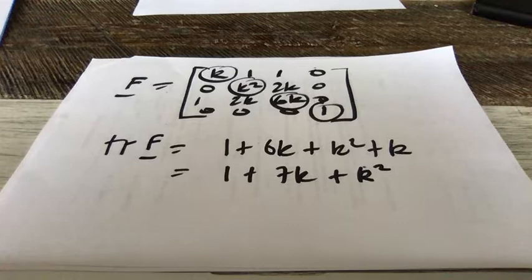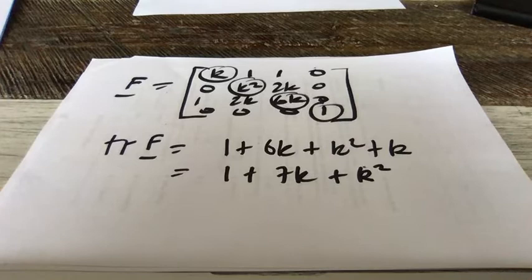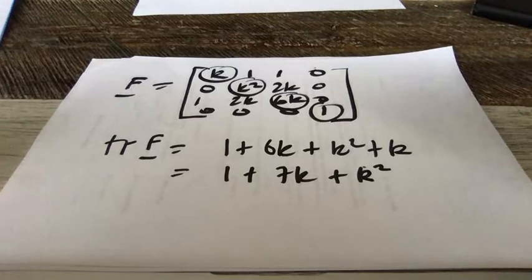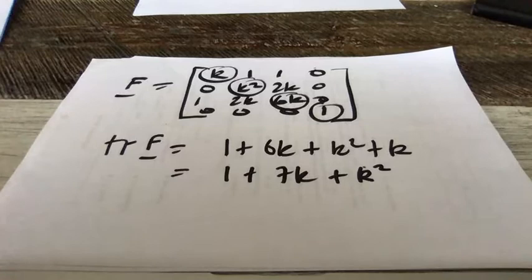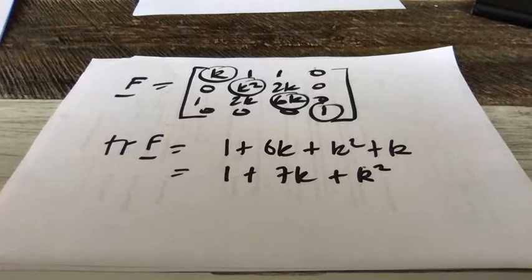So it's a single number — once you know what K is, you get a number. You're taking 16 numbers and condensing them into a single number: 1 + 7K + K squared. That's the first thing we've done. It's a very simple operation, but it's something you need to remember. The problem with matrices is there's lots of terminology and lots of simple recipes, and you have to put all that stuff into your brains. That's the first part of summarizing matrices — the trace.